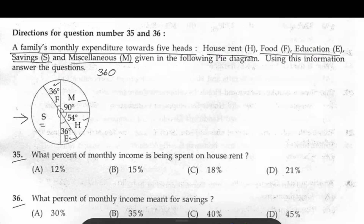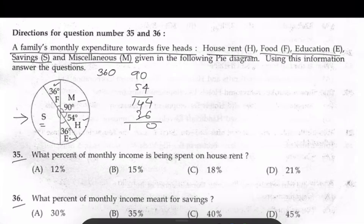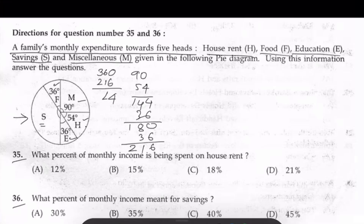So 90 plus 54 equals 144, plus 36 equals 180, plus another 36 equals 216. So 360 minus 216 equals 144 degrees. This angle for savings is 144 degrees.